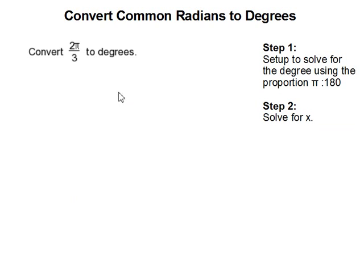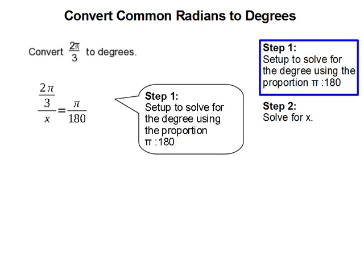Now we're going to do another problem. And the same concept applies. Set up 2 pi over 3 over x equals pi over 180.